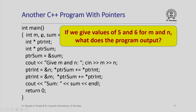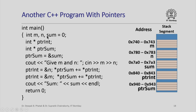Let us see another C++ program that uses this facility to update memory locations via pointers. This program has several integer variables and several integer pointer variables. We read in the values of m and n as before, then print something called sum. If we give values of 5 and 6 for m and n, what does the program output? Pointer_int and pointer_sum are both pointers to integers and will store addresses.